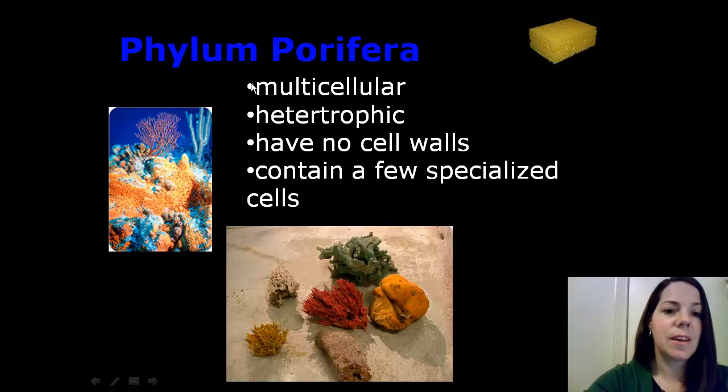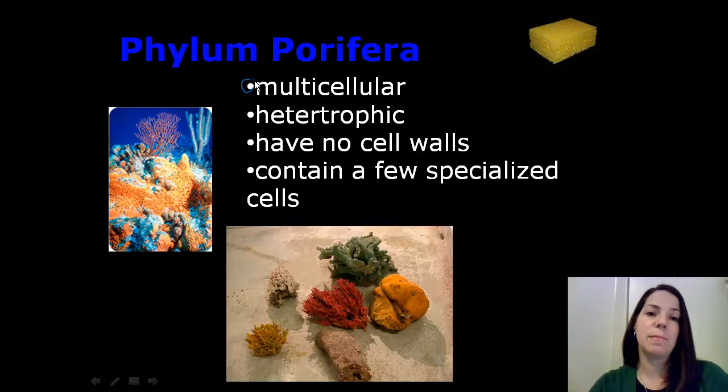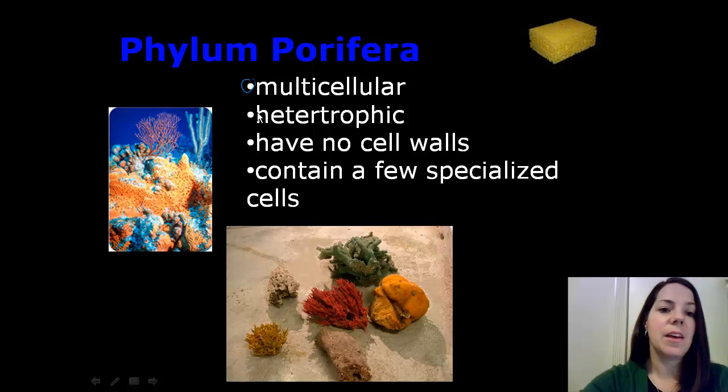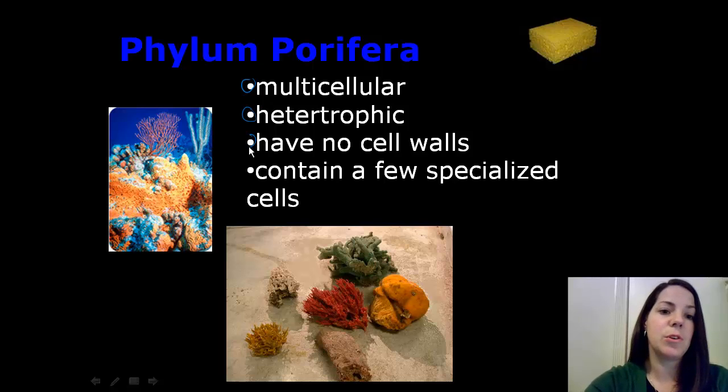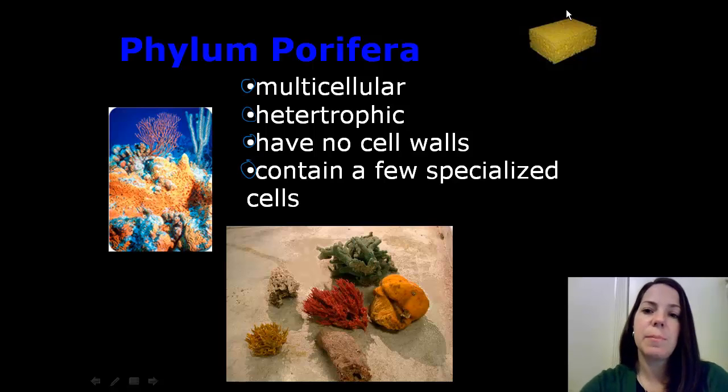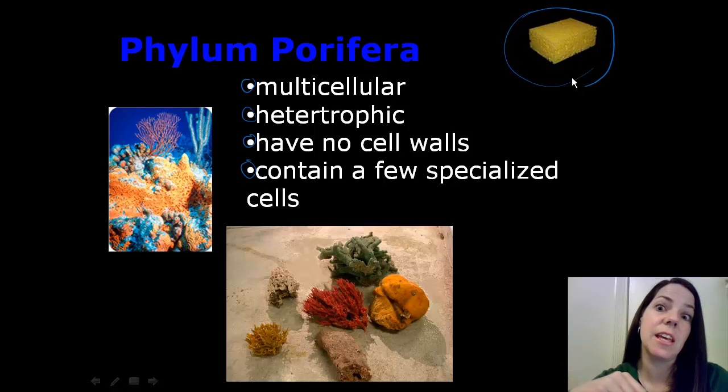To begin with, they are all multicellular, so they have many cells. They are heterotrophic, meaning that they require nutrition. They have no cell walls, and they also contain a few specialized cells. Now you can see up here in the corner of the screen the typical sponge that you would use for cleaning in your household chores. However, this sponge is made out of plastic.